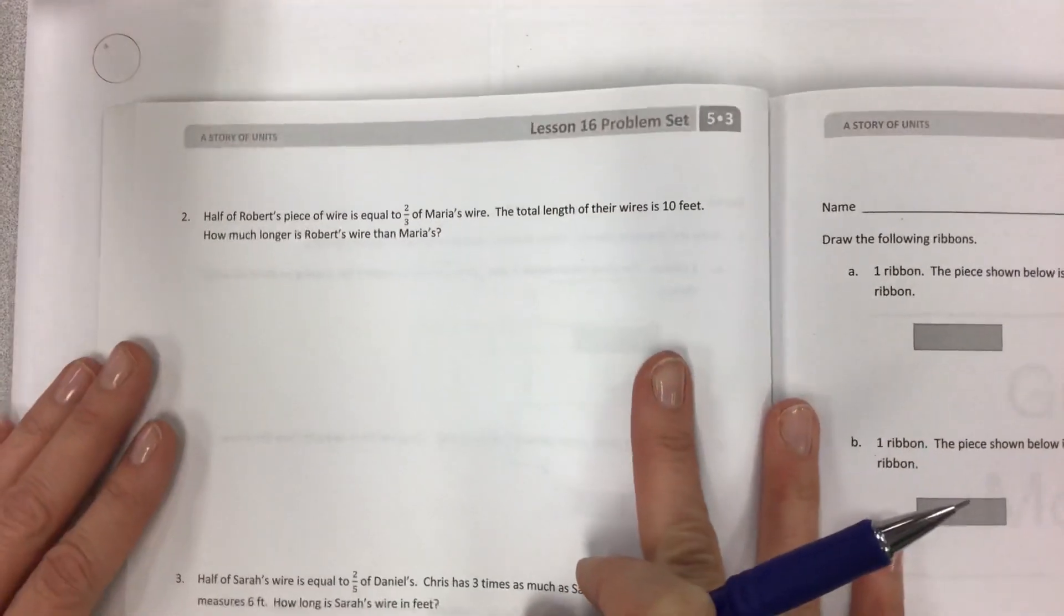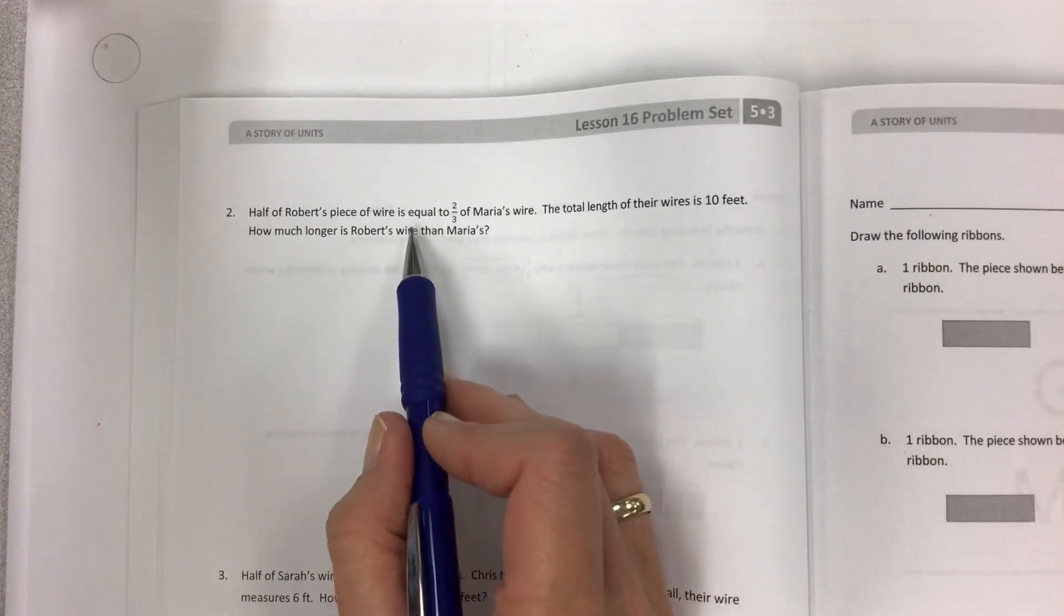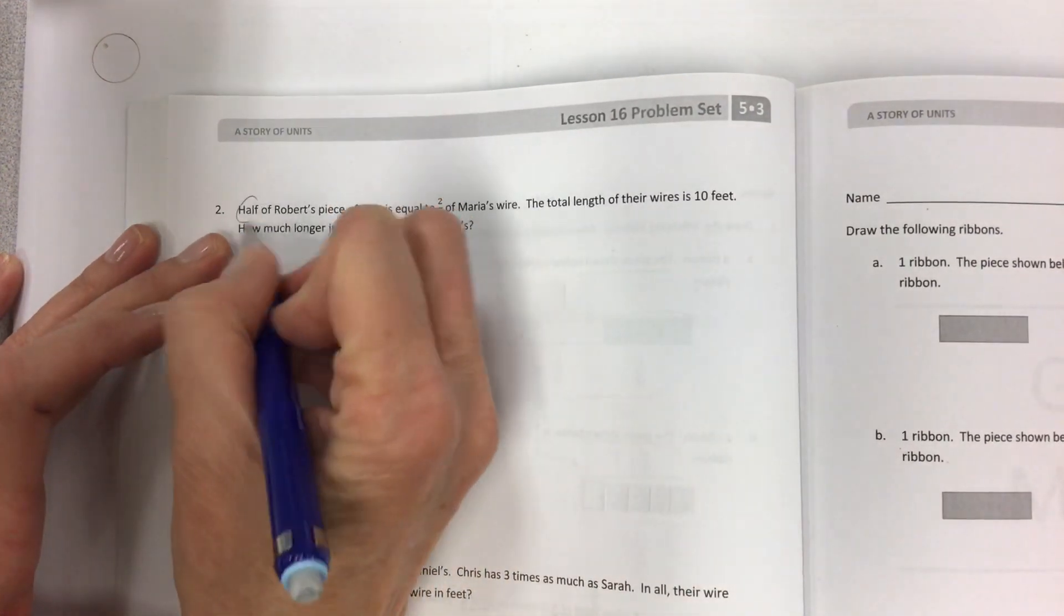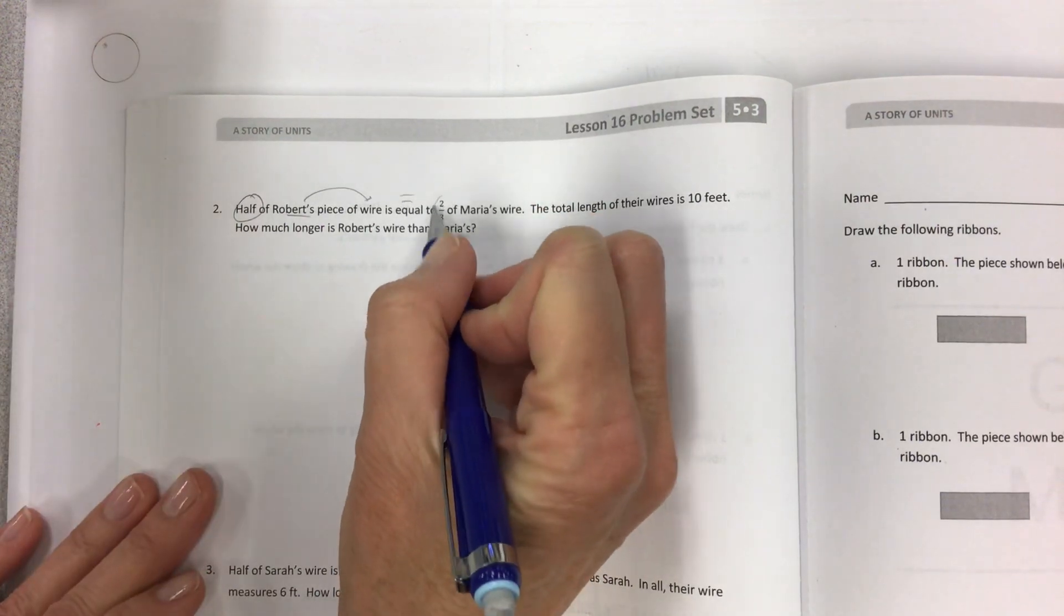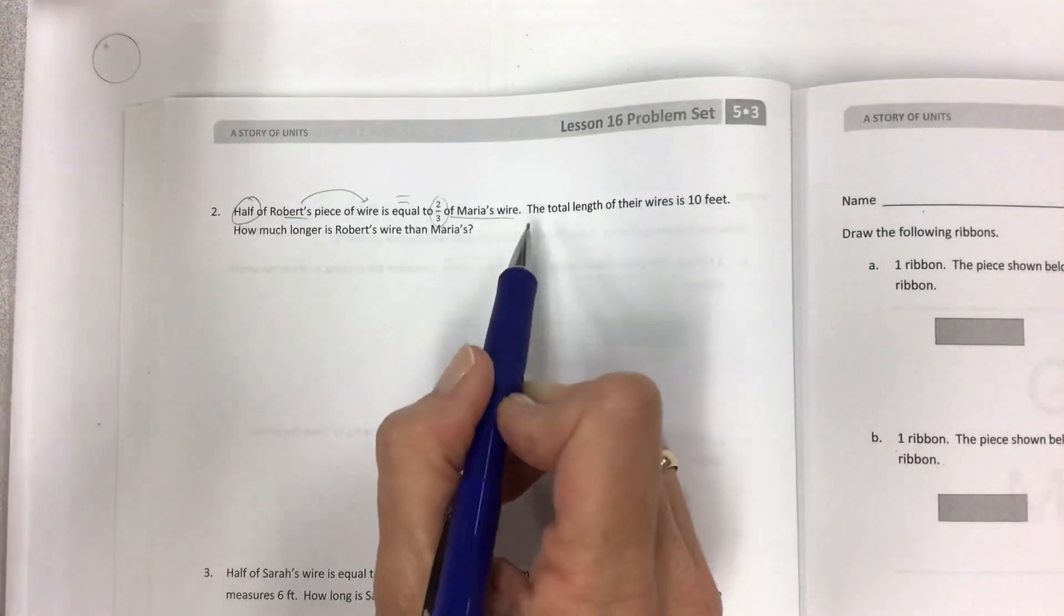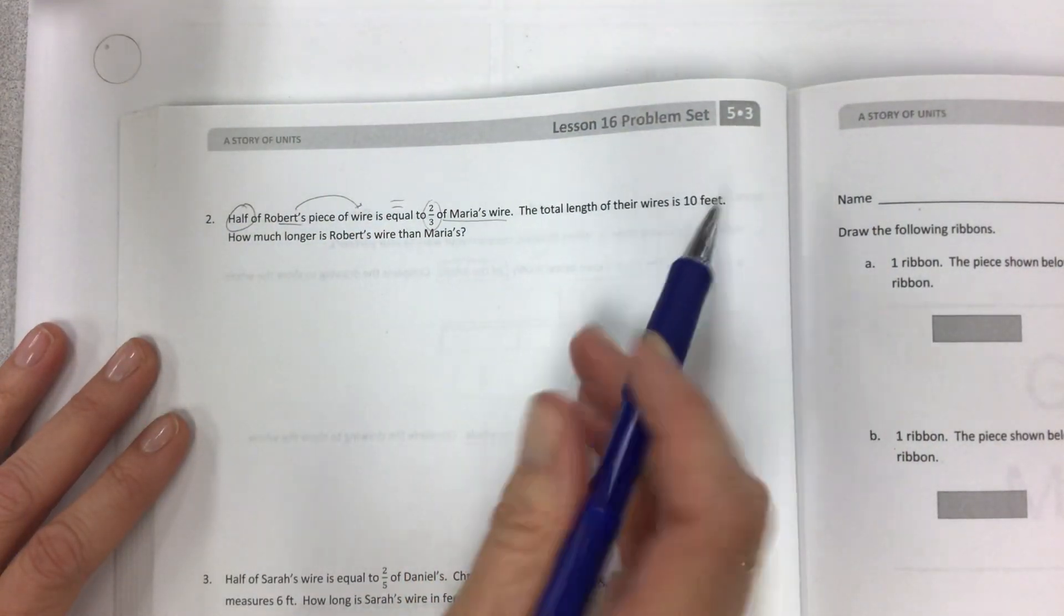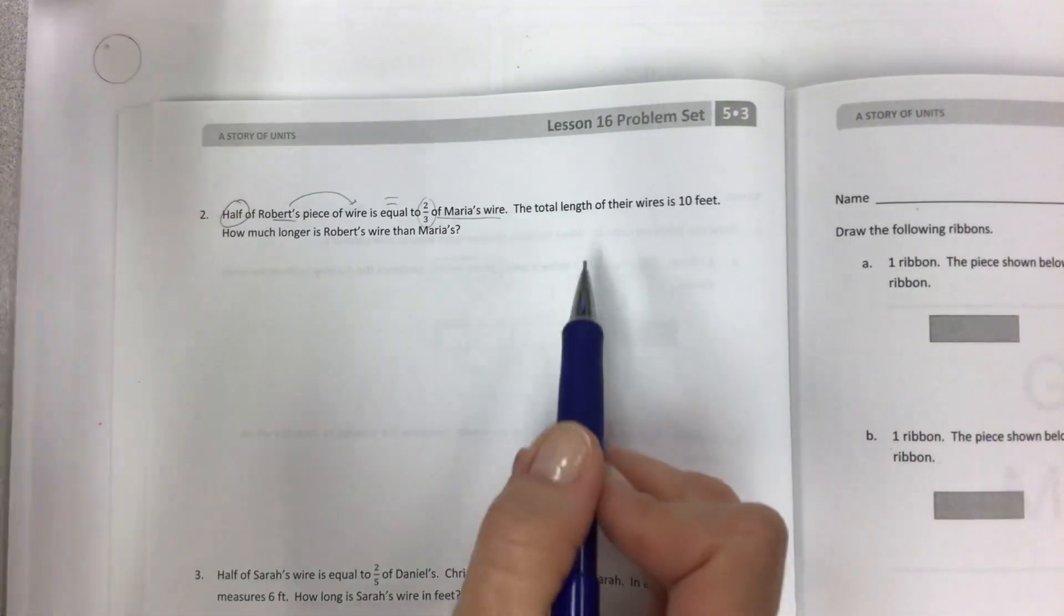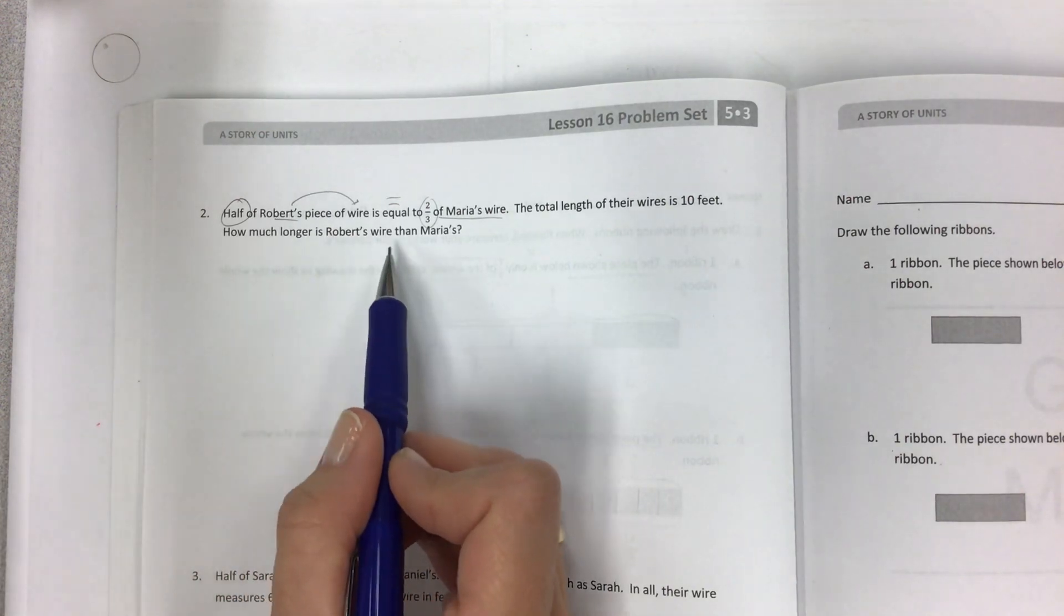The homework is very similar to this. Half of Robert's piece of wire is equal to two-thirds of Maria's wire. Half of his wire is equal to two out of three pieces of Maria's wire. Now we have more information. The total length of their wires is 10 feet, which we'll put off to the side. How much longer is Robert's wire than Maria's?